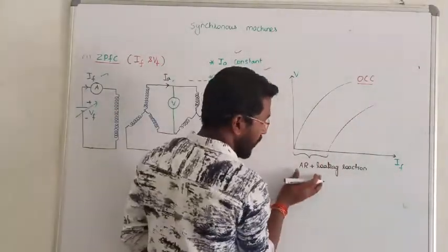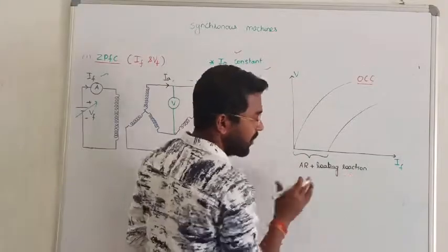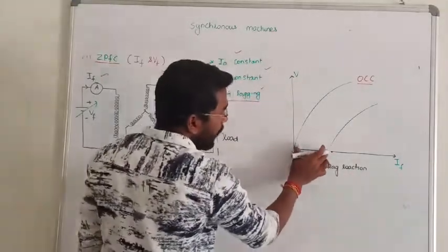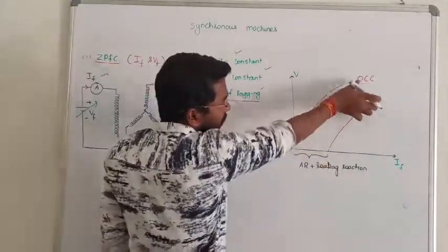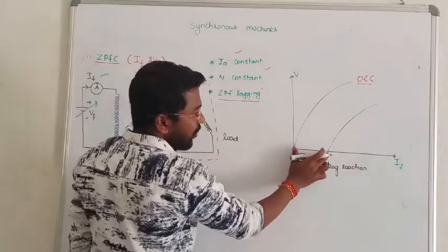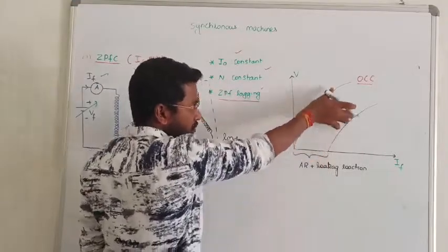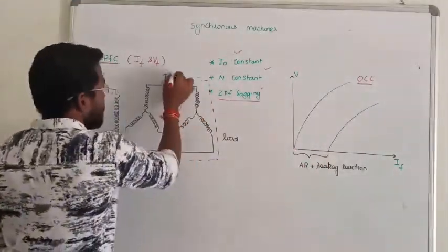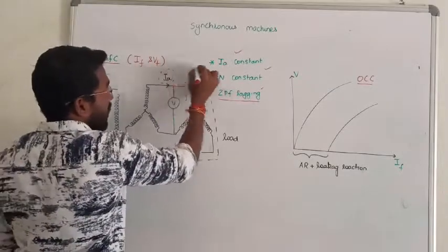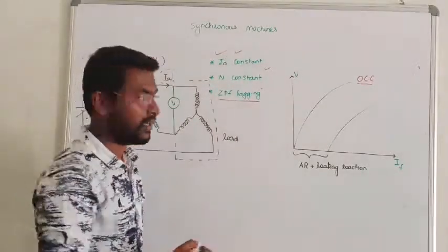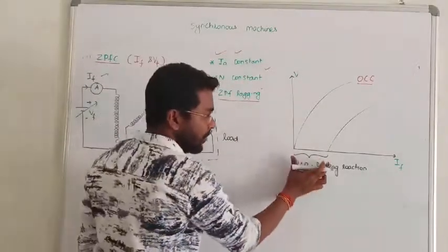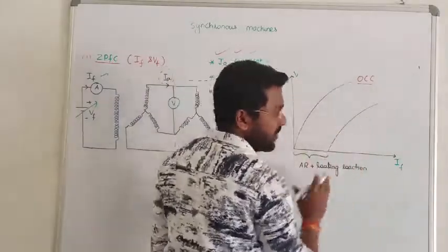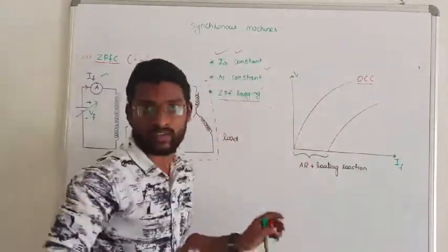We have to consider the effect of armature reaction and leakage reactance. One more thing is that the curve is constant — the open circuit characteristics curve and the zero power factor characteristics curve are constant. We are fixing them as constant. The shifted value is also constant; there is no change, there is no deviation.